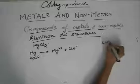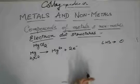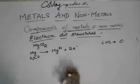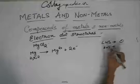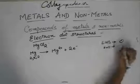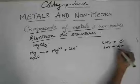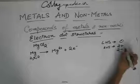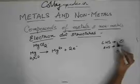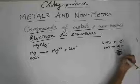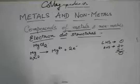On the left-hand side, the charge was zero because Mg is neutral. On the right-hand side, we have Mg²⁺ (two positive charges) and two electrons (two negative charges), so they sum to zero. Hence the charge on the LHS equals the charge on the RHS, and the equation is balanced.